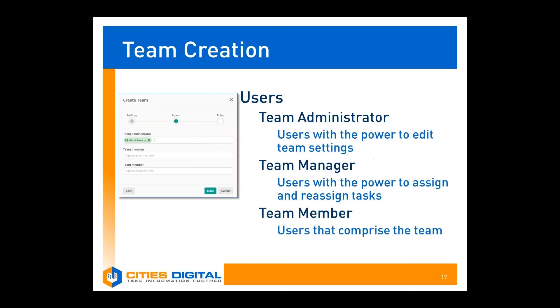Next, we need to set up our users. The team administrator will automatically be assigned to the user creating the team — in this case, our administrator user. Team administrators have the power to edit team settings, add users and roles, and delete teams. Team managers have the ability to assign and reassign tasks within their team and can also add users and roles. Team members are all the users that perform work inside that team. Note that team managers can also be team members.